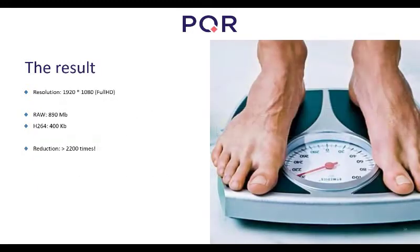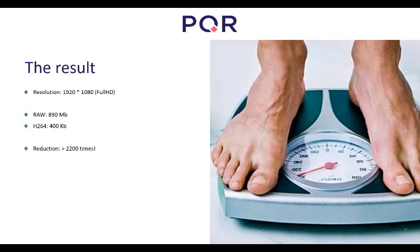The result is that an uncompressed 5-second video at 30 frames per second is around 900 megabytes. Compressed with H.264 it comes down to just around 400 kilobytes — a reduction of about 200 times. That's amazing.